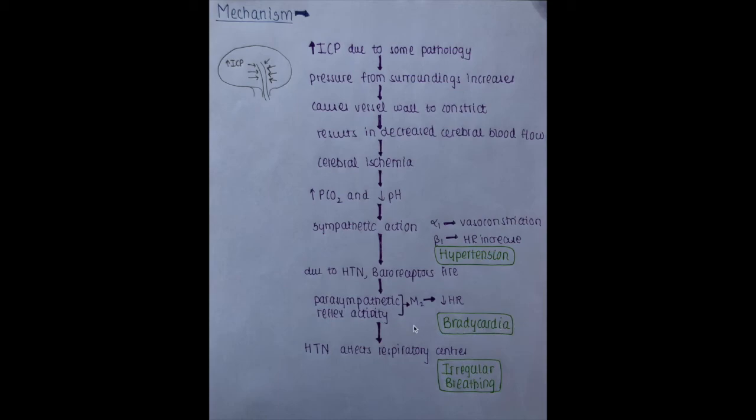Also hypertension will affect the respiratory centers in the central nervous system and will cause irregular breathing. So the three signs of Cushing reflex that appear when increased intracranial pressure is there are hypertension, bradycardia, and irregular breathing.